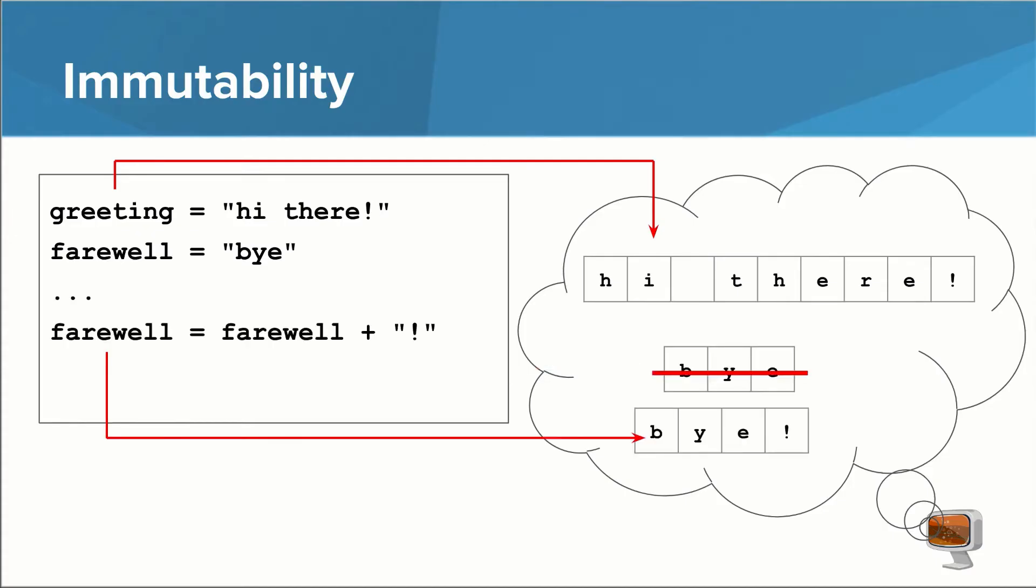You can swap out a string for an entirely different string. The new string can even include pieces of old strings, or entire old strings. In this case, we make a new string out of the old string farewell and another string that just has an exclamation point. This is all allowed, and this is about as close as you can get to mutating or changing a string.